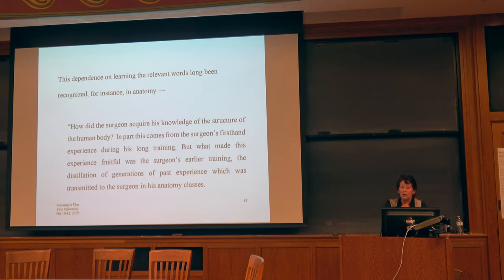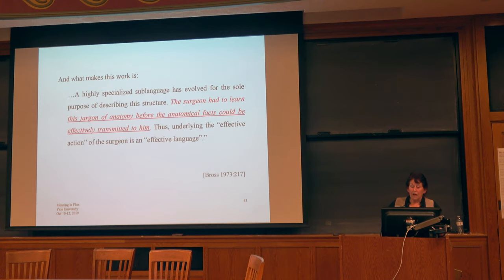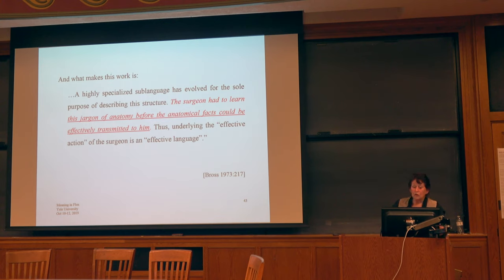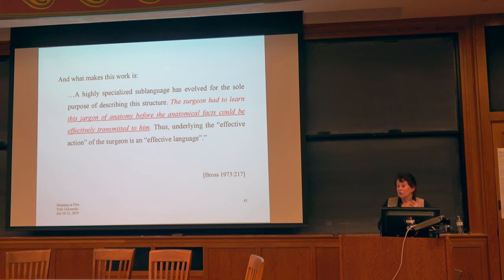This dependence on learning the relevant words for a new domain has long been recognized in fields like anatomy in medicine: the surgeon acquires knowledge of the structure of the human body partly from first-hand experience during long training, but what makes it work is that he simultaneously learns a highly specialized sub-language evolved for the sole purpose of describing that structure. The surgeon had to learn the jargon of anatomy before the anatomical facts could be effectively transmitted. You're having to learn both the language for a domain and the conceptual domain itself at the same time — something that has been overlooked in much of the discussion in linguistics of adult usage and children's learning.